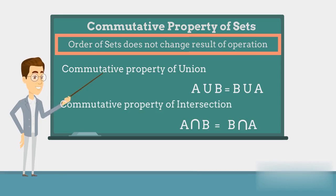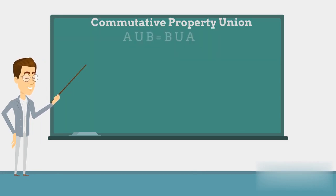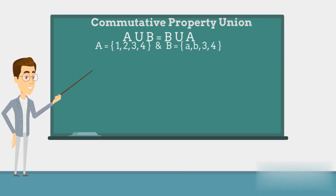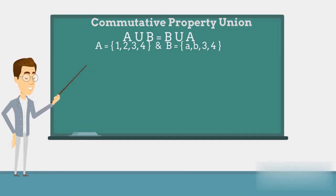Let's prove this property with the help of examples. Suppose set A contains 1, 2, 3, and 4, and set B contains A, B, 3, and 4.